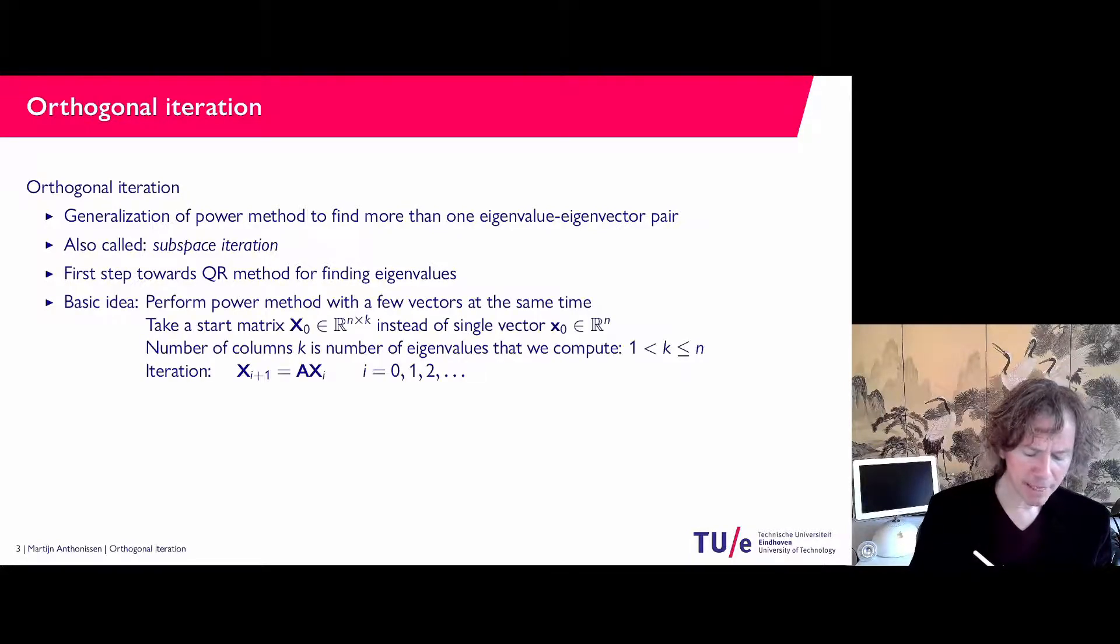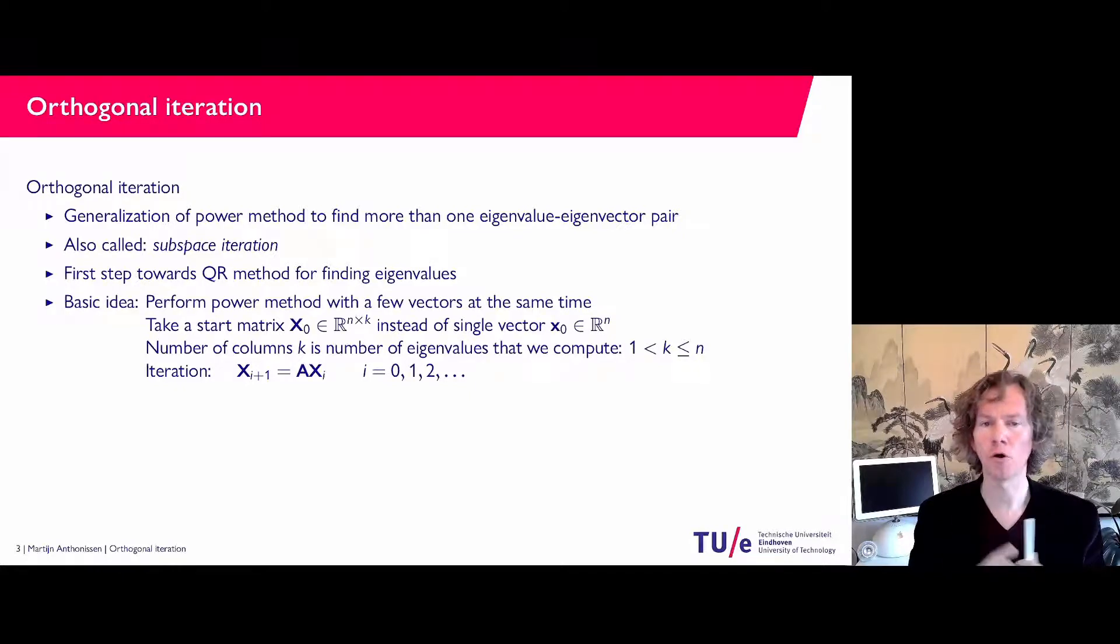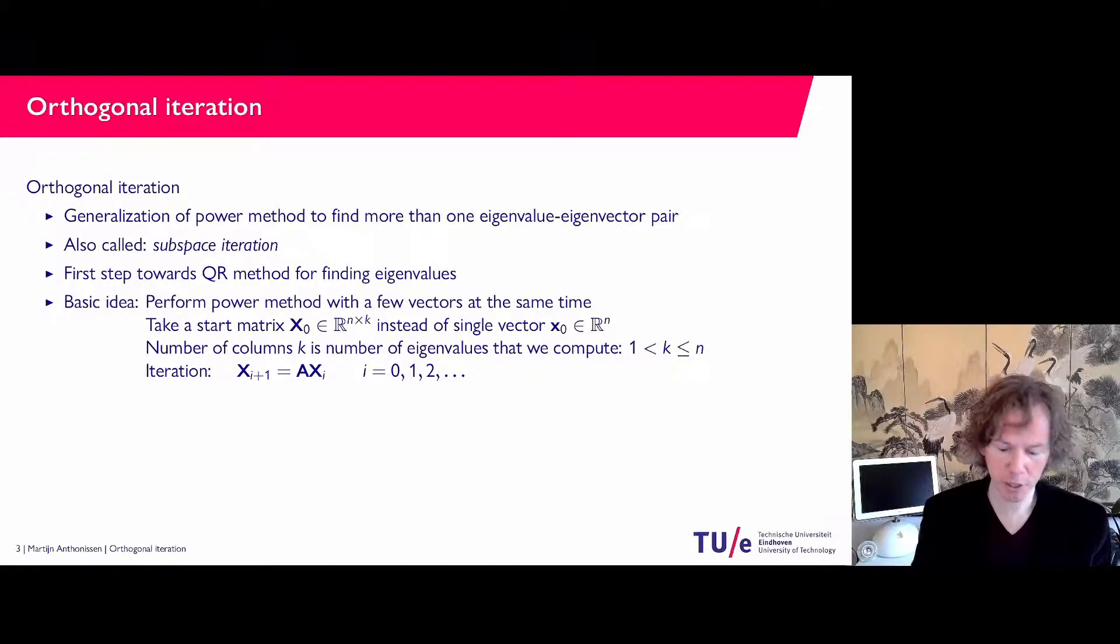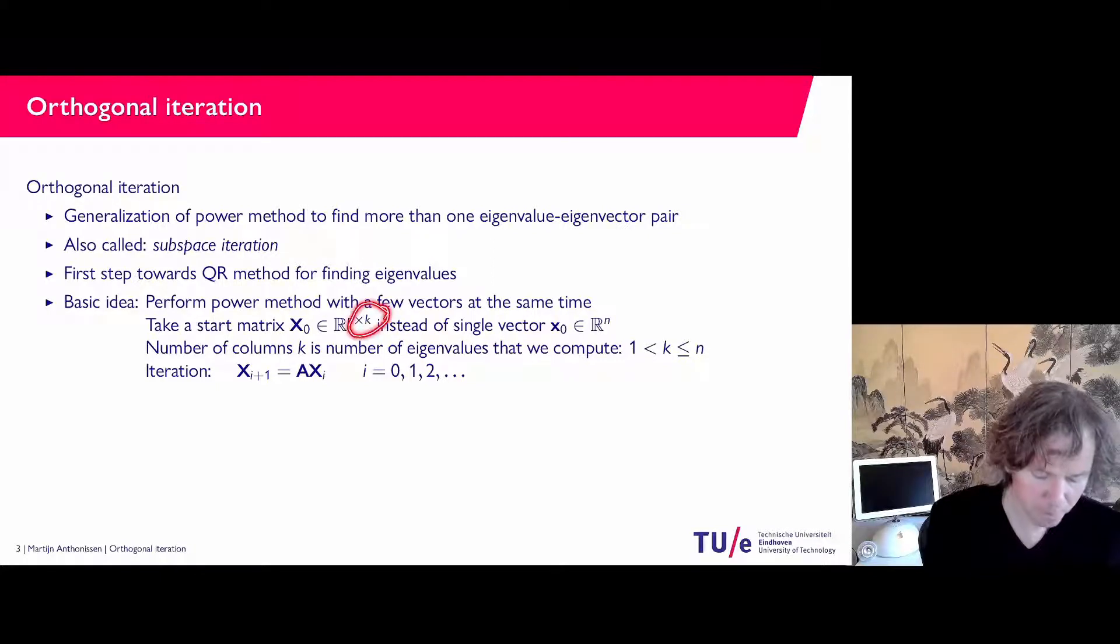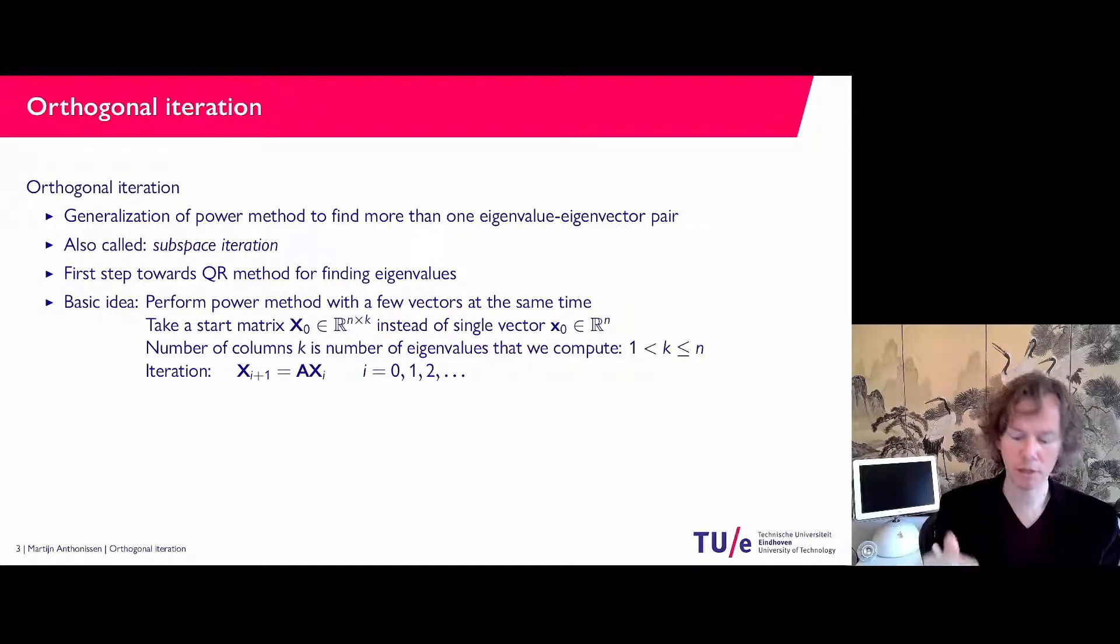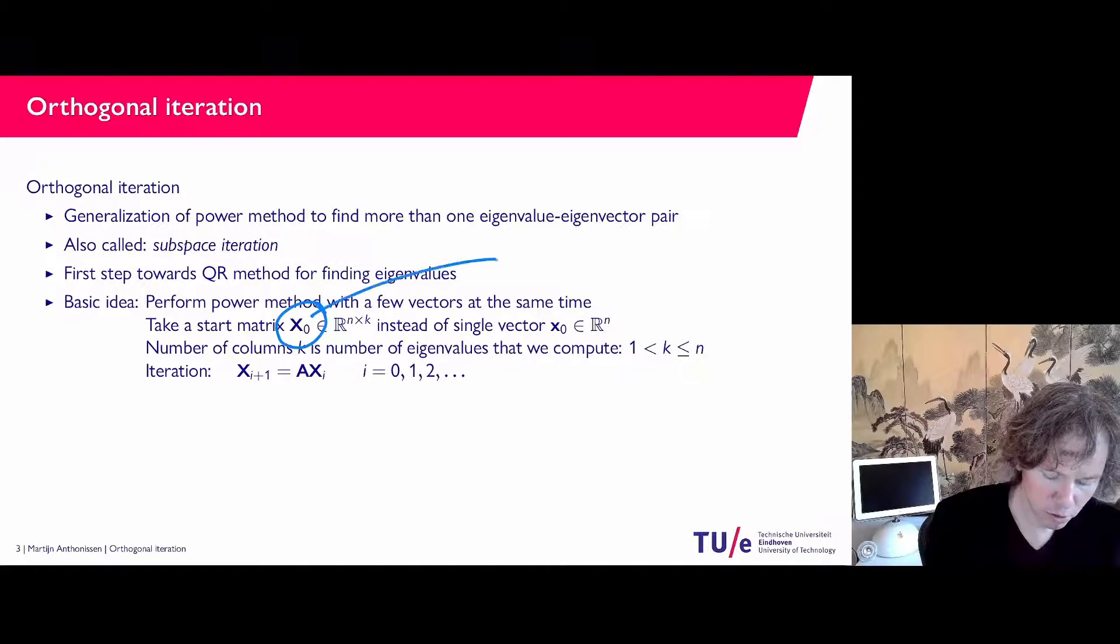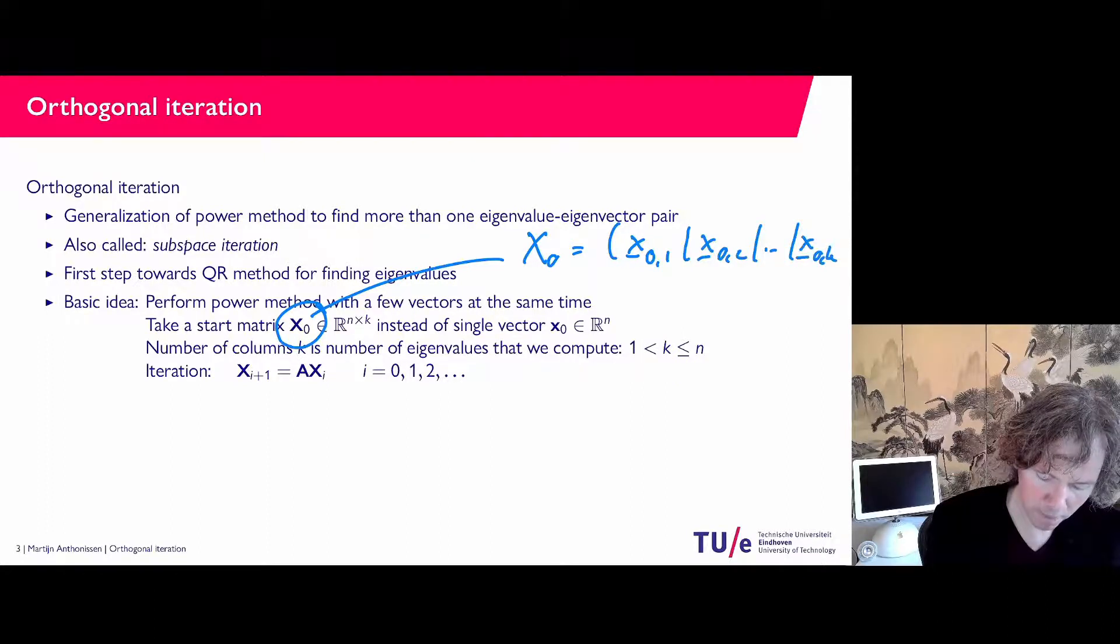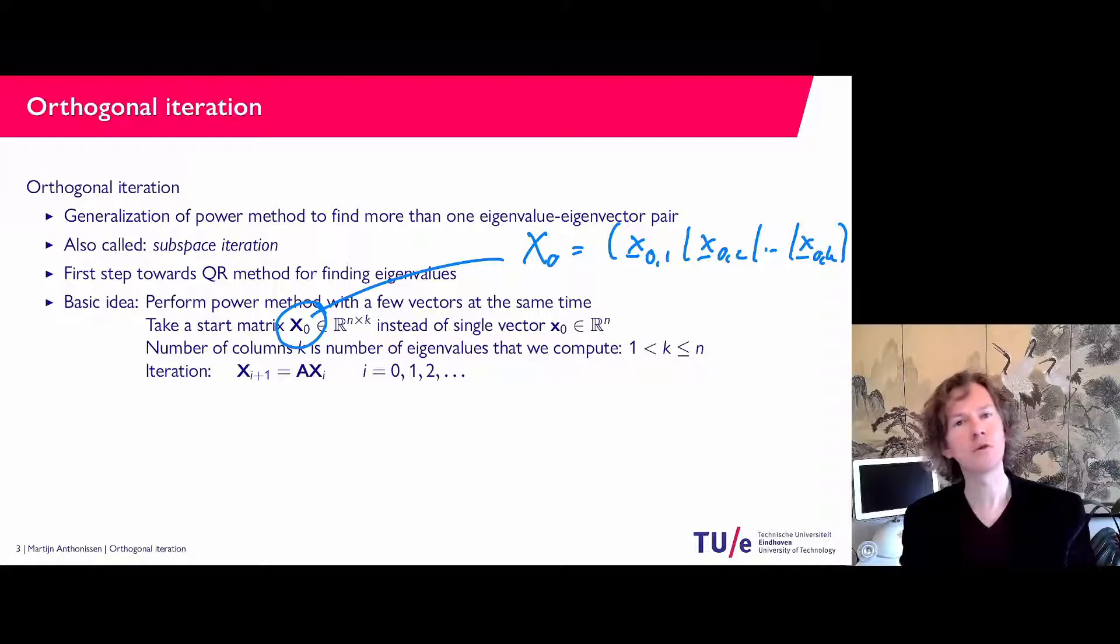Now the basic idea is that we do not do the power method with one vector. We take a bunch of them, we take k of them, and I'm going to put them next to each other in a matrix. This matrix X_0 has a couple of columns: X_{0,1}, a vector X_{0,2}, up to a vector X_{0,k}. So this is basically like doing the power method for k vectors at the same time.